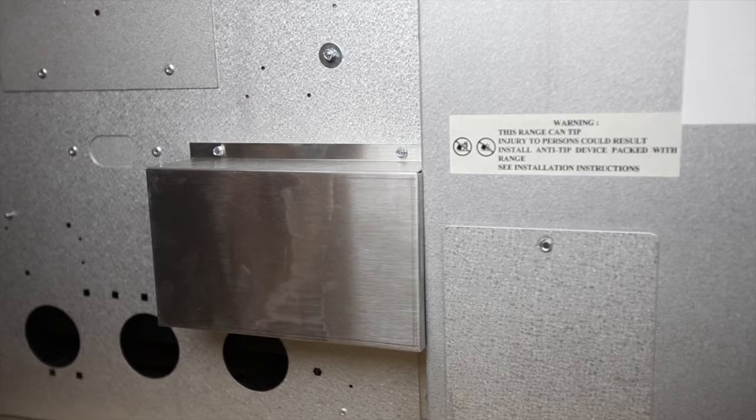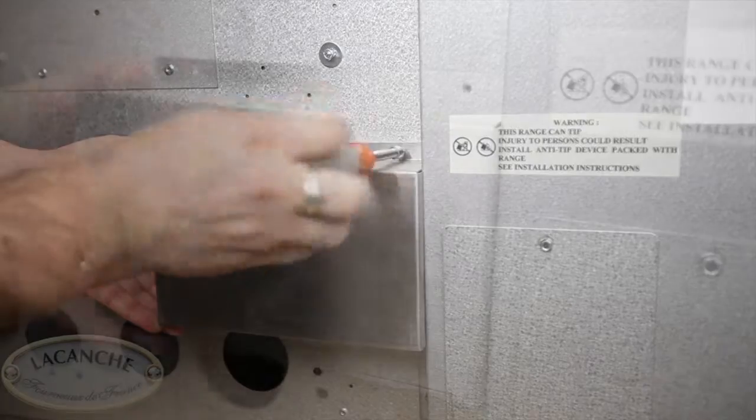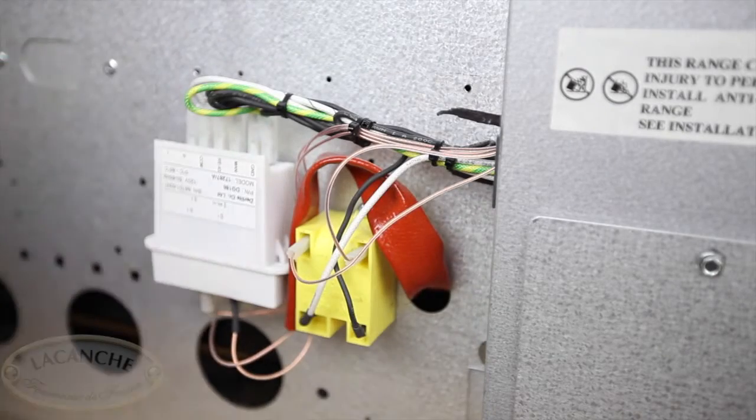For Jenn-Air models, move the range from the wall to gain access to the spark module cover box. Remove the spark module cover box by removing the two 7mm hex head screws.